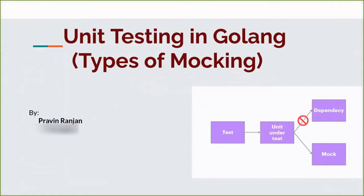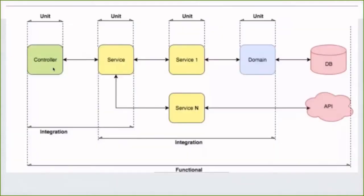As you can see in the right-side diagram, we have a block we want to test. In every programming language some dependency code will be there. If you write a unit test and simply call that function, the dependency will also get called automatically. But in unit testing we don't want to cover the dependency part — that's the main intention of mocking: don't call the real dependency, call some fake dependency instead.